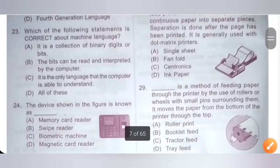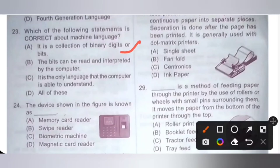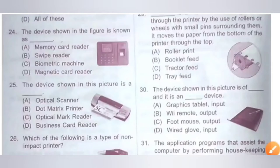Question 23: Which of the following statements is correct about machine language? Option A: It is a collection of binary digits or bits — correct. Option B: The bits can be read and interpreted by the computer — correct. Option C: It is the only language that the computer is able to understand — true. The correct option is D — all of these.